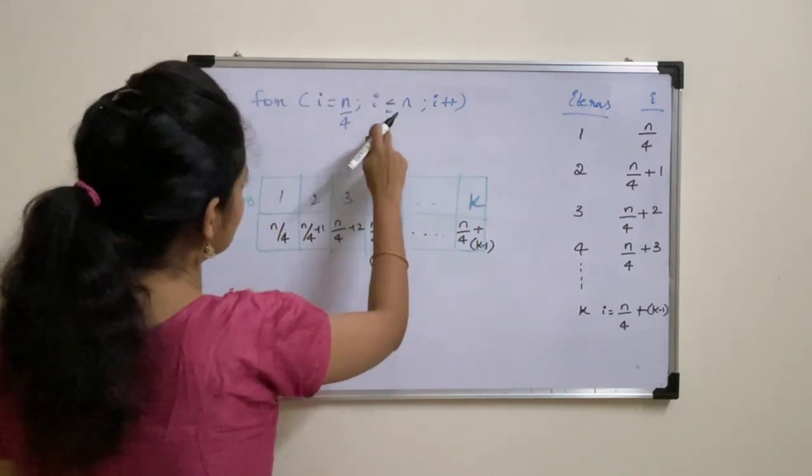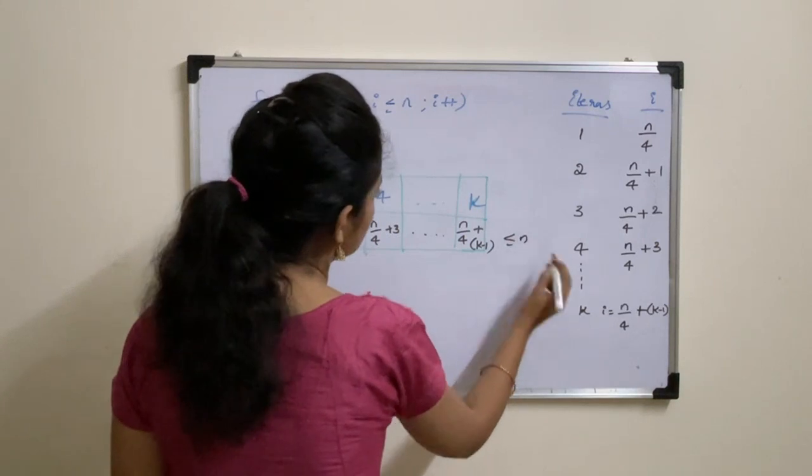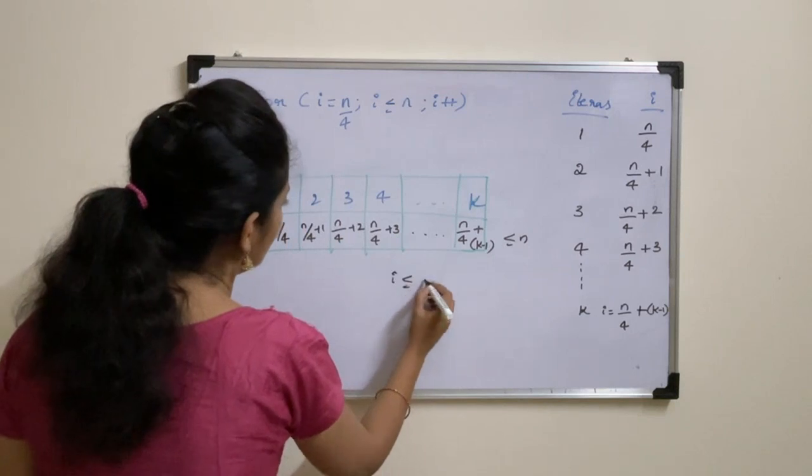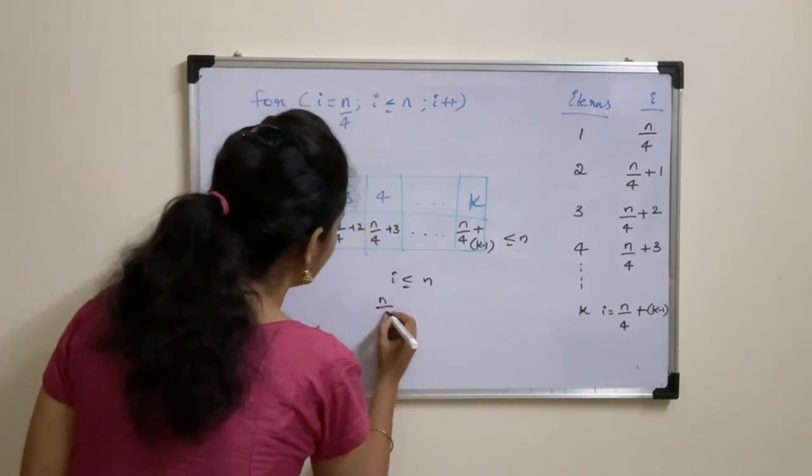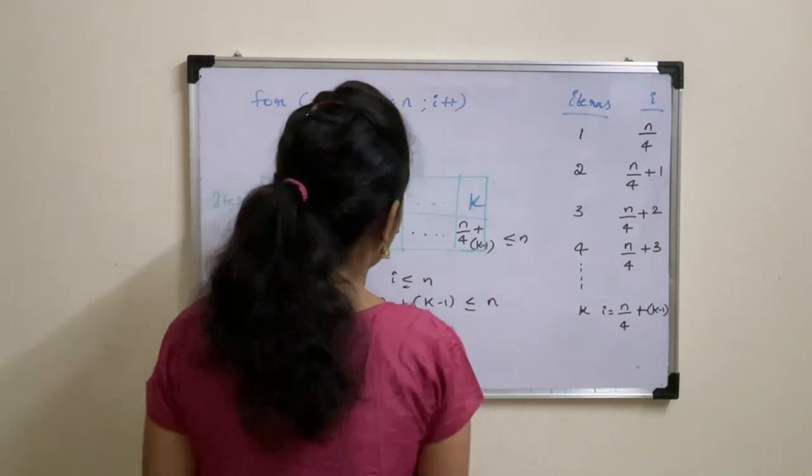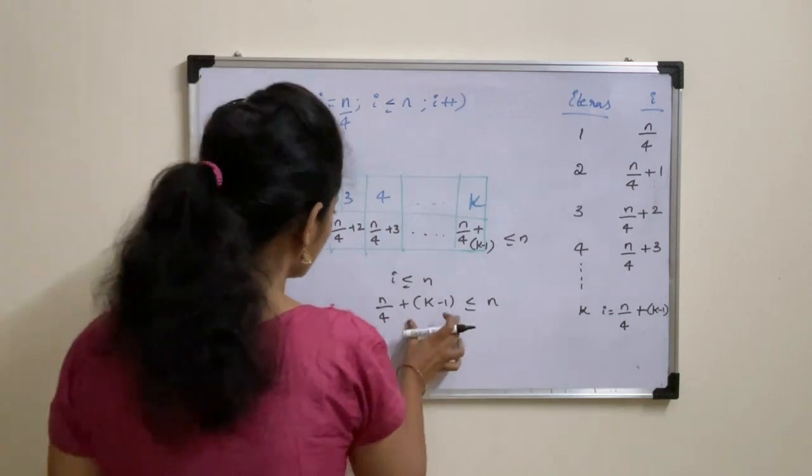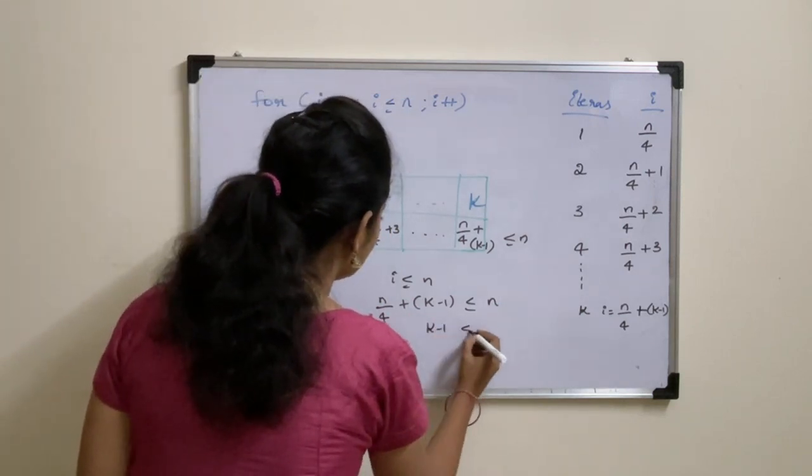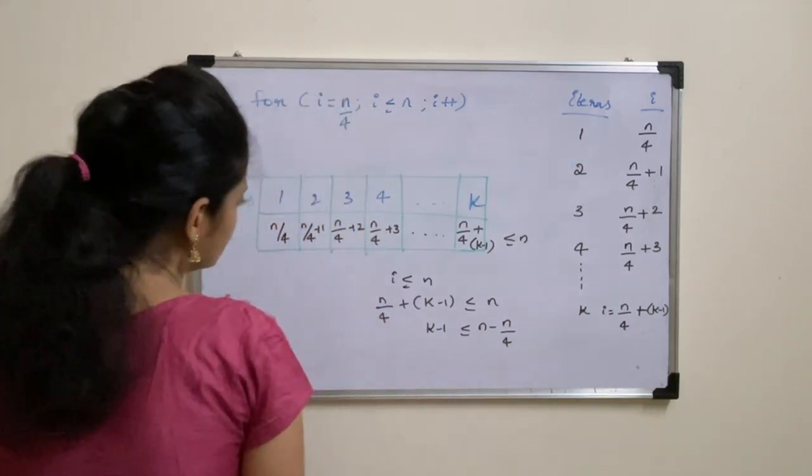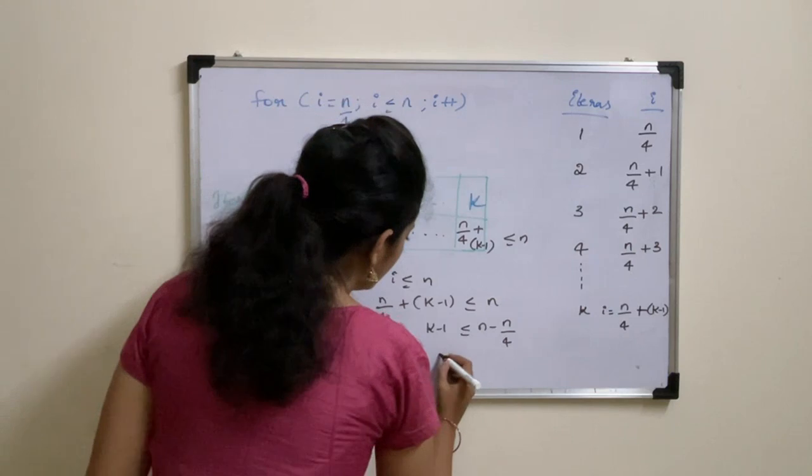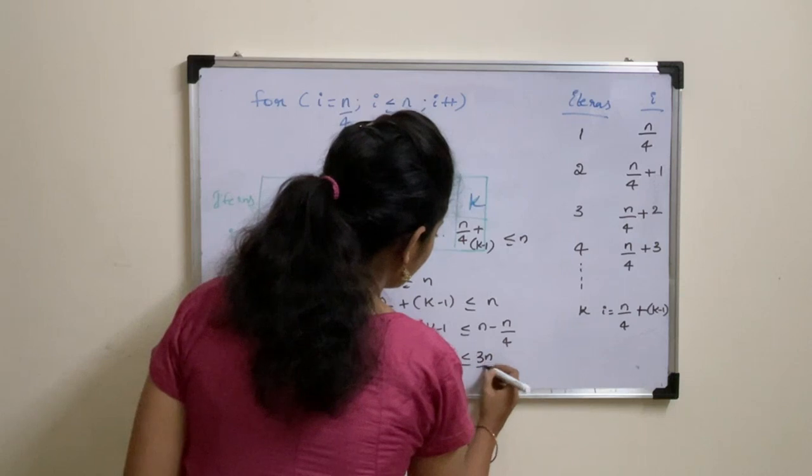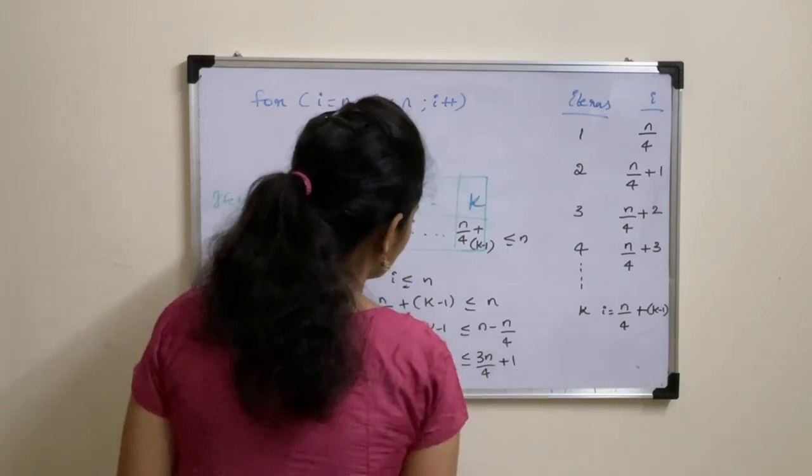The condition is less than or equal to N. So this is nothing but your i value. i is less than or equal to N. So take this i value, N by 4 plus K minus 1, less than or equal to N. So this can be written as K minus 1 equal to N minus N by 4. And K less than or equal to 3N by 4 plus 1.